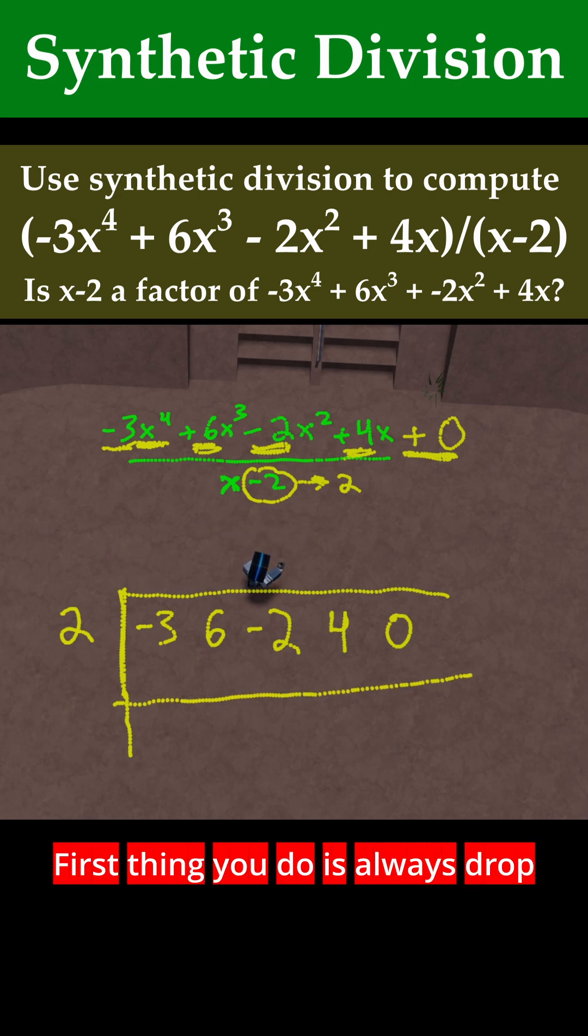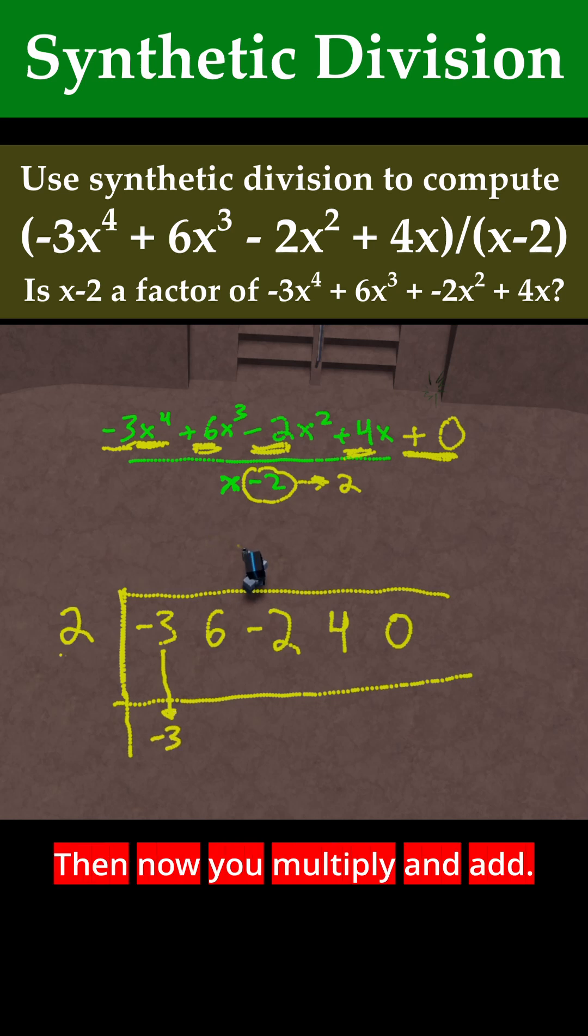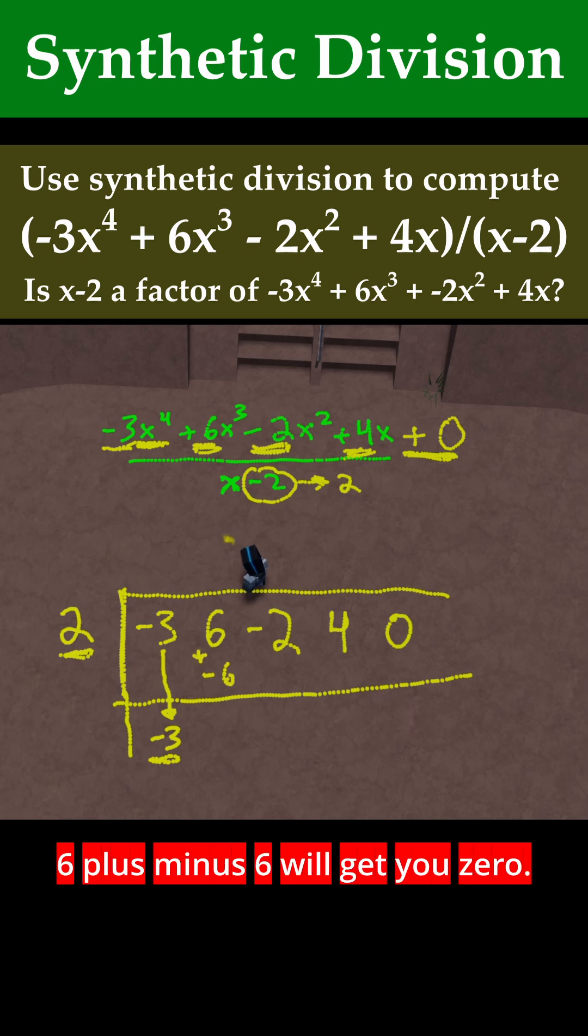First thing you do is you always drop down the leftmost number inside that table. So the -3, we drop that down and leave it there. Then now you multiply and add. 2 times -3 is -6. Now you add these numbers: 6 + (-6) will get you 0.